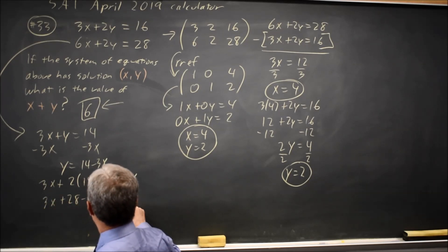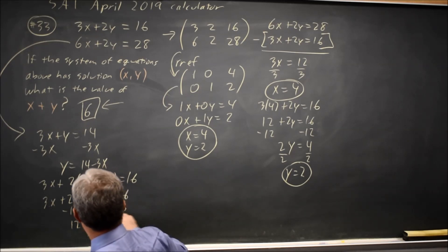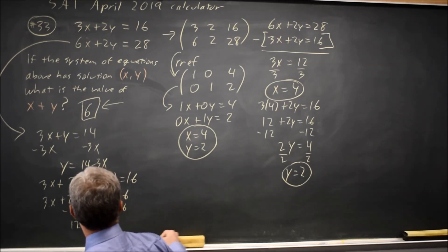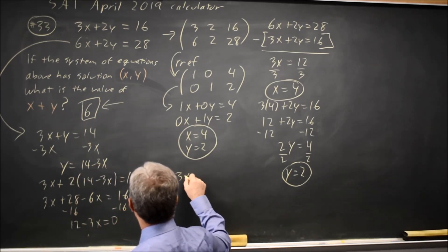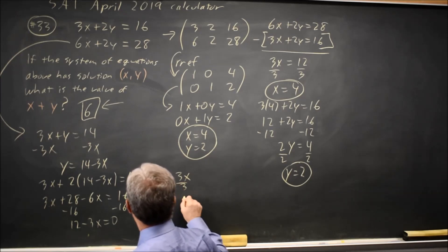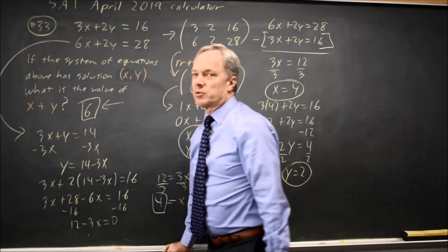Let's subtract 16 from both sides. And I get 12 minus 3x equals 0. Add 3x to both sides. And I get 12 equals 3x, divided by 3, x equals 4. Same answer I got before. And from there I could solve for y.